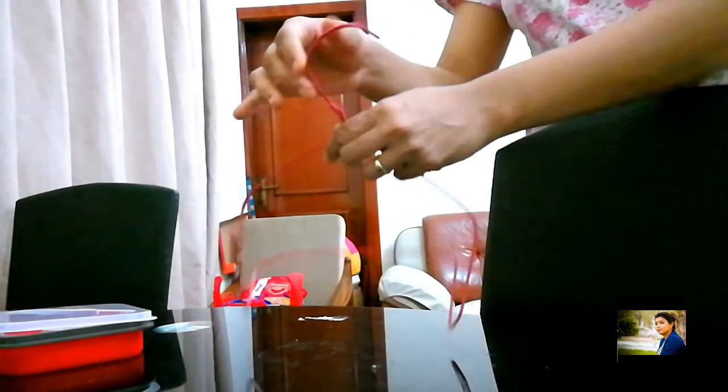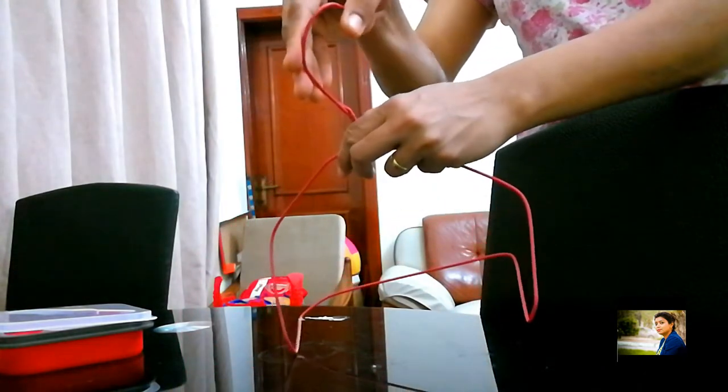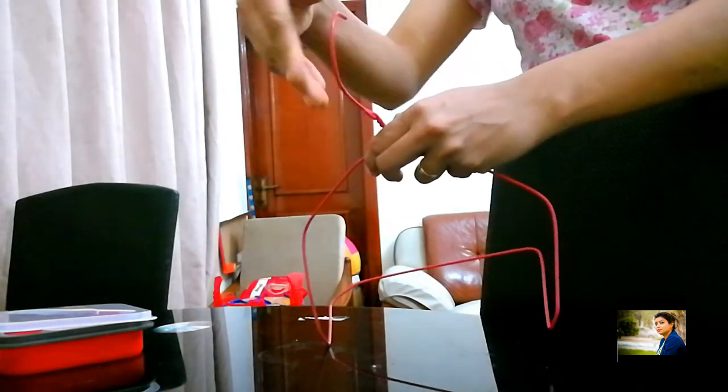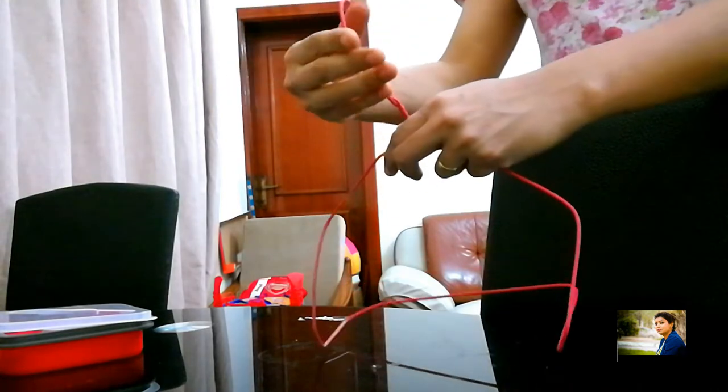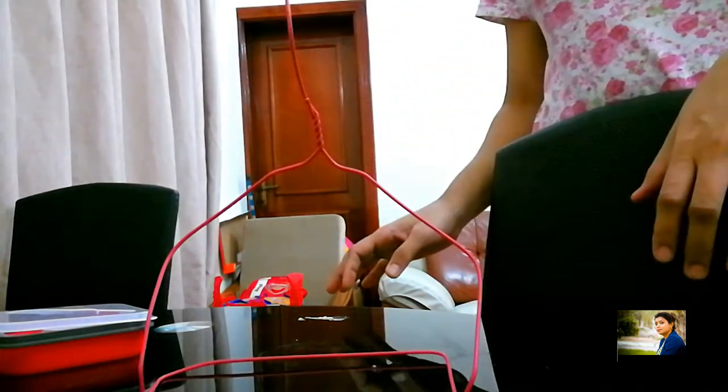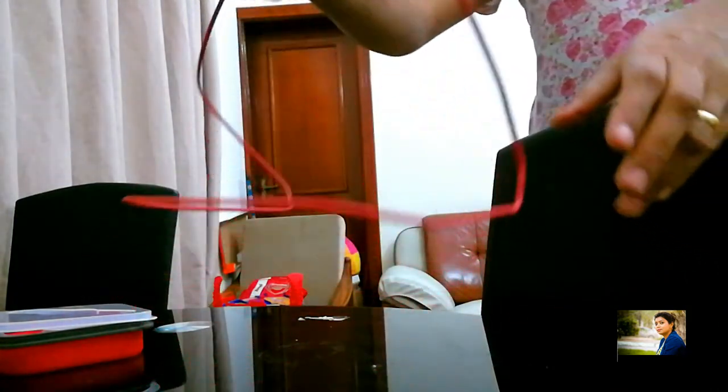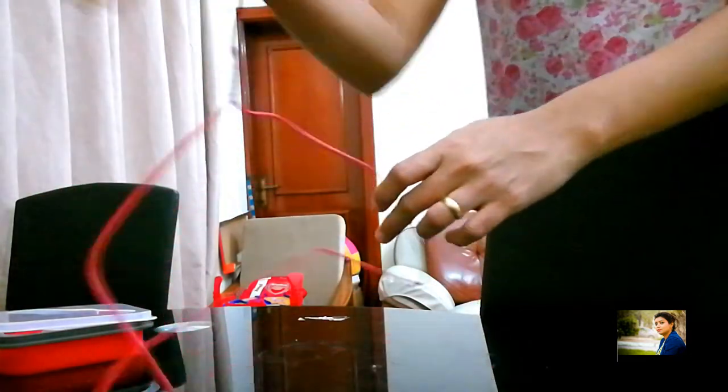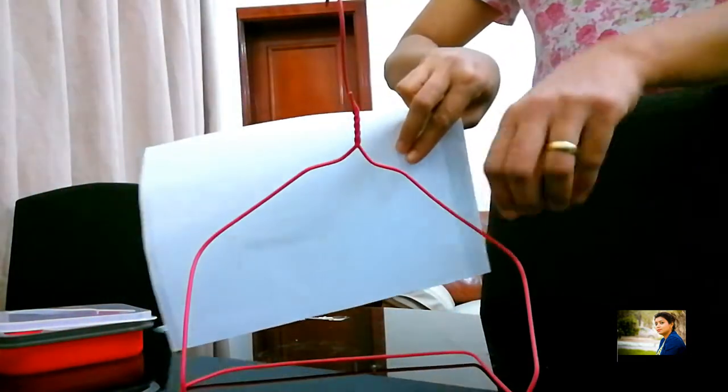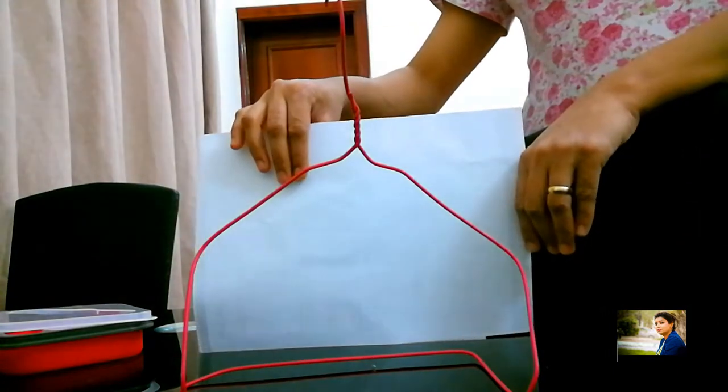Once you do this, you make the top part of the hanger, just twist it. Yes, like that. So once you twist it, then you have to fold it downwards so that the bananas can be able to hang. I am showing you by using here how it looks like.